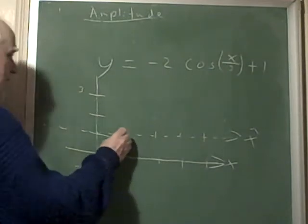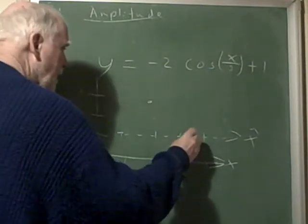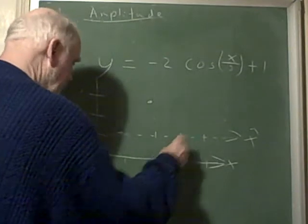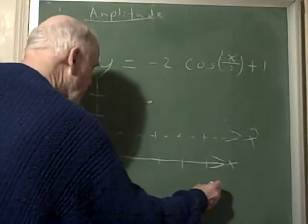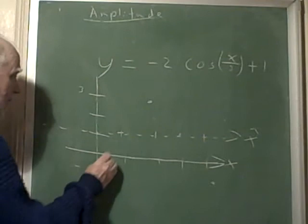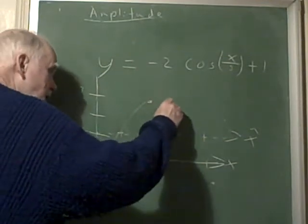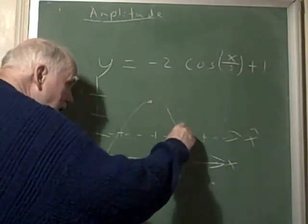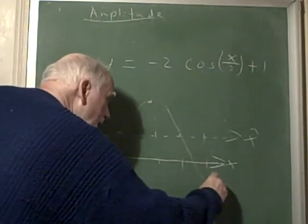So instead of going like this, it's going to start down here, go here, go up here, go here, and then finally all the way down to here. So it's going to look like this, it looks like the basic cotangent wave.